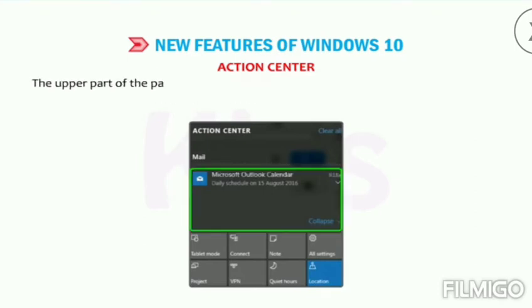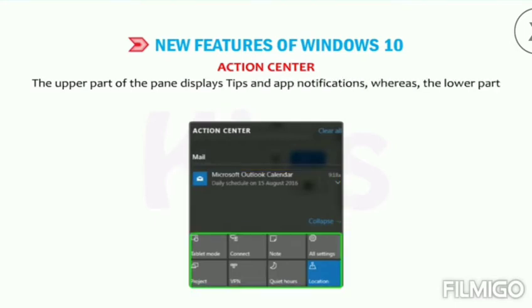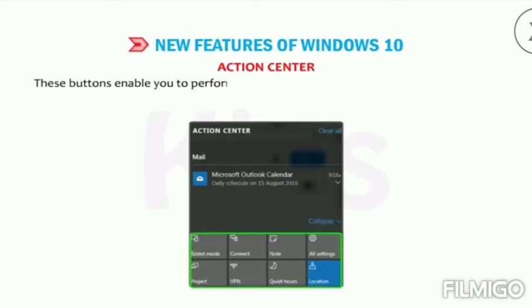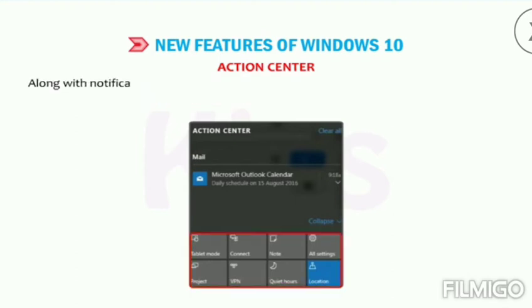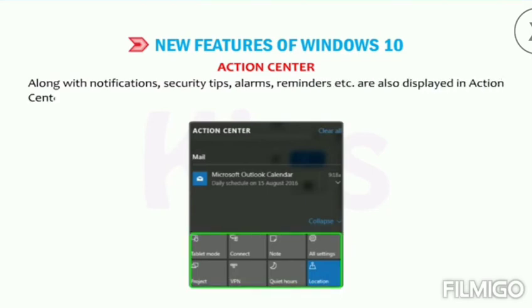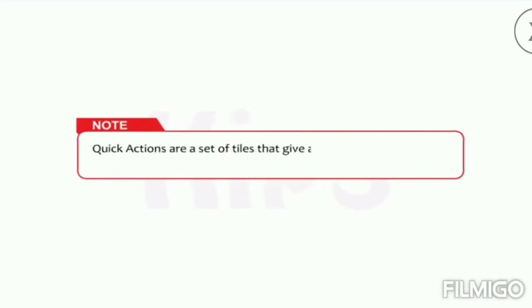The upper part of the pane displays tips and app notifications, whereas the lower part displays a series of quick action buttons. These buttons enable you to perform actions such as adjusting the screen brightness, turning Bluetooth on or off, switching to tablet mode, etc. Along with notifications, security tips, alarms, reminders, etc. are also displayed in Action Center. Quick actions are a set of tiles that give access to frequently used settings and tasks.